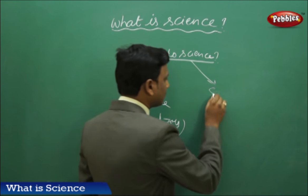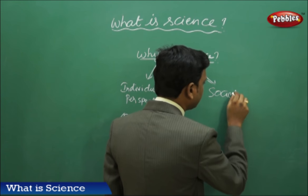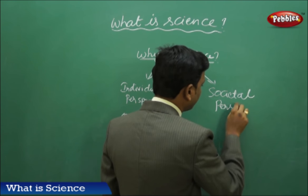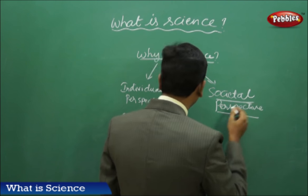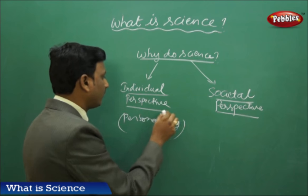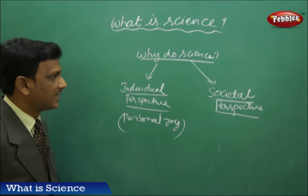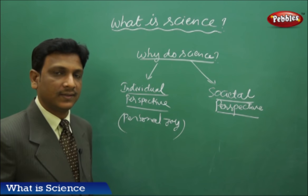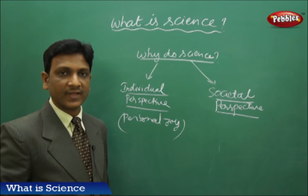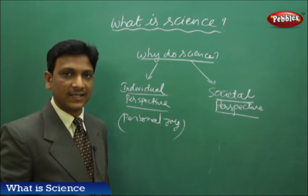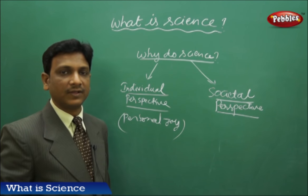The second one is societal perspective. We've seen the individual perspective of researchers or scientists - they have personal joy. Societal perspective: keeping society in mind, finding solutions to different challenges for mankind.